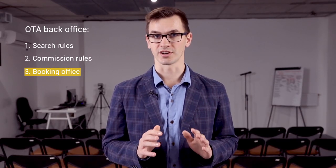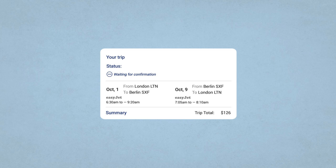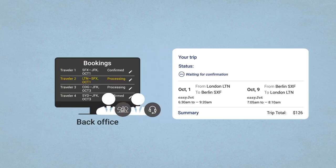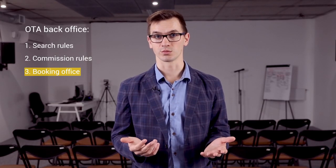Ok. Let's say that the traveler has booked the flight. Here's when a travel agent starts acting. Travel agents and customer support workers would use a booking office. The interface contains all the information about current bookings. With this tool, a travel agent can check details on the reservation, make sure that the payment is valid and the airline has sent a ticket. Here, you can also cancel a flight, change dates, or rebook a flight with another carrier. All these actions must be supported by booking office software.